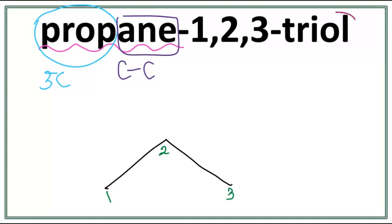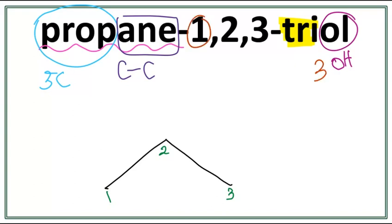This 'ol' here tells us that this is an alcohol, meaning we have an OH group — a hydroxyl — present. We see the word 'tri' here. This 'tri' tells us that we have three groups of OH present. One of them is on the first carbon, the other one is on the second carbon, and the other one on the third carbon.